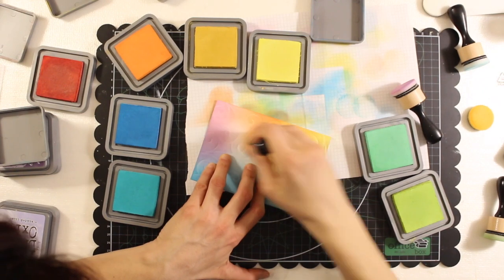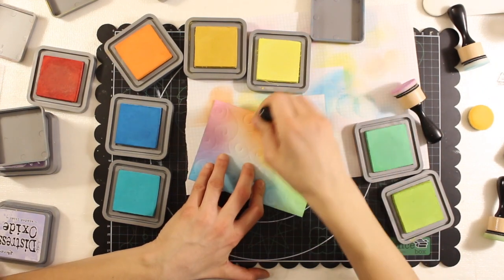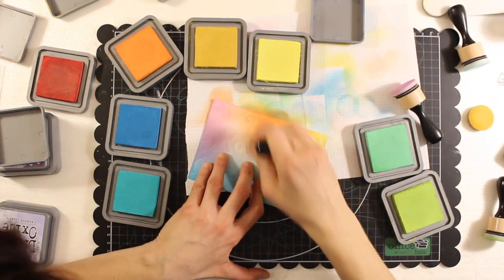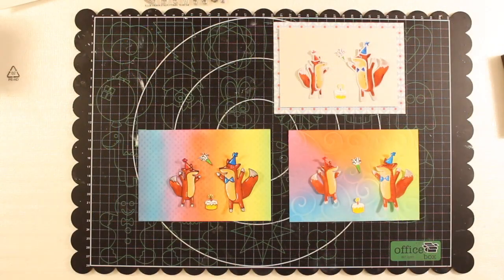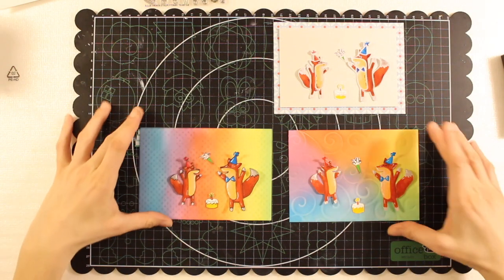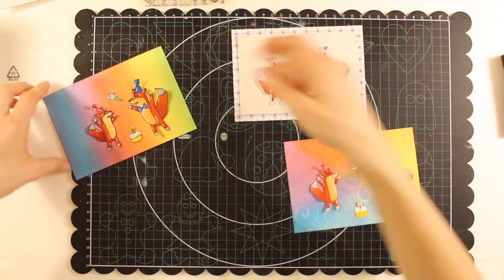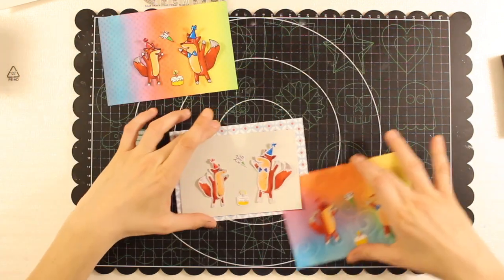You will see it in a minute when I show you the three finished backgrounds. Here it is, it's the one on the bottom left corner with the parallel stripes. Now, I'm going to add some sort of confetti to the backgrounds using the stamps.